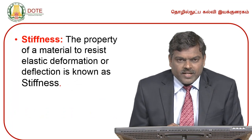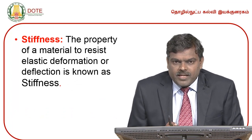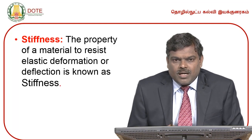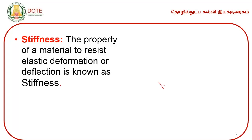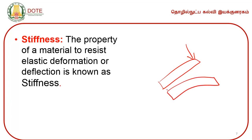Stiffness is the property of a material to resist elastic deformation or deflection. When a force is applied on a material, there would normally be some deformation, but a stiff material does not permit elastic deformation or deflection. This property is called as stiffness.